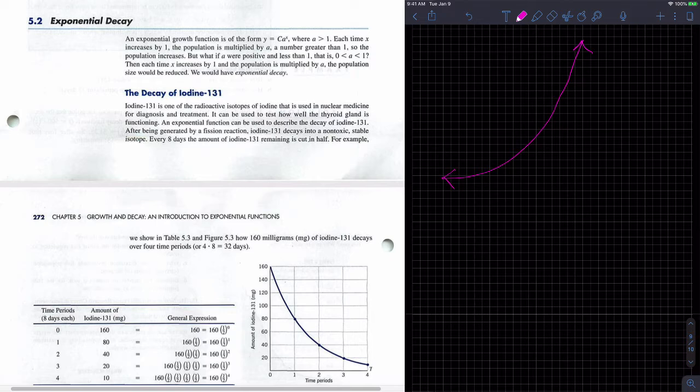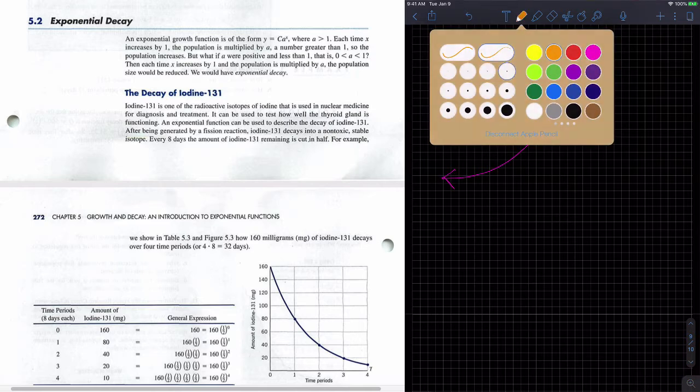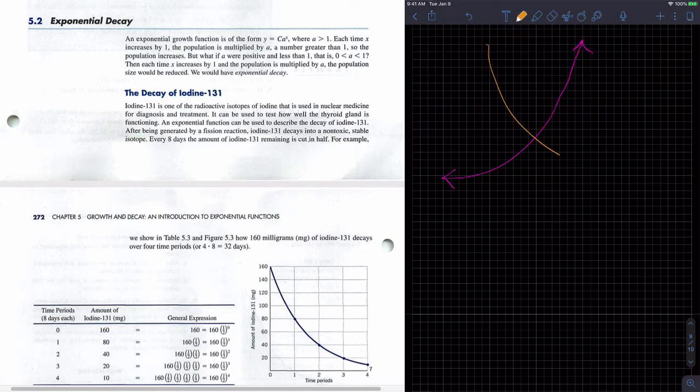Exponential decay would be when I start out with some amount and it reduces. So exponential decay would look like this. It's pretty straightforward. We can get significantly more complicated, but we want to focus on these two situations.